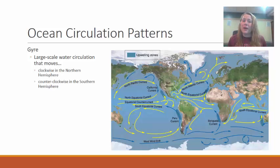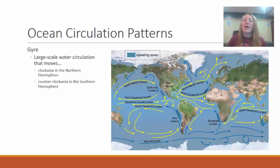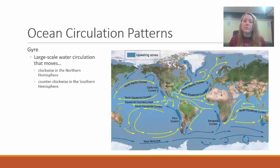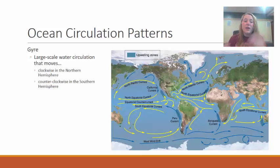When we look at ocean circulation patterns, you will notice that the northern hemisphere and southern hemisphere have what are called ocean gyres. These are large-scale water circulation movements. You will see in this diagram that the surface waters in the northern hemisphere tend to circulate in a clockwise direction, whereas the surface waters in the southern hemisphere tend to move in a counterclockwise direction.